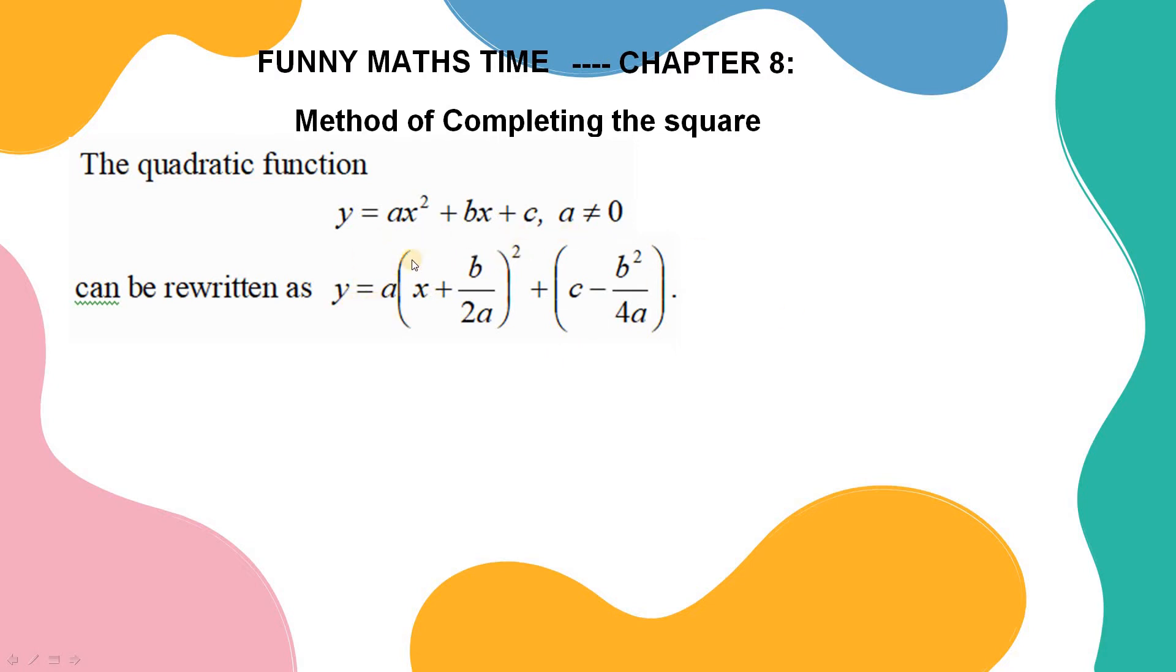y equal to a times bracket x plus b over 2a bracket power to 2 plus bracket c minus b squared over 4a.